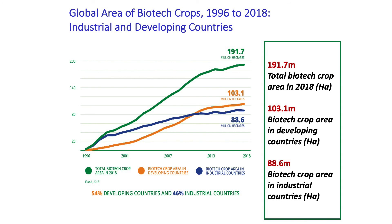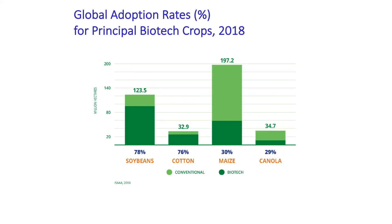Since the first commercialization in 1996, acreage has increased over the years. It is important to note the increase in participation by developing countries as saturation in the developed world takes place. The leading crops for GMO adoption include soybean at 78%, cotton at 76%, maize at 30%, and canola at 29% — these are the global adoption rates as of 2018.